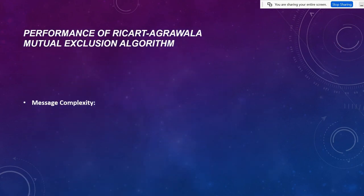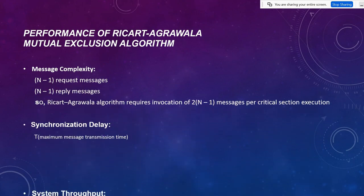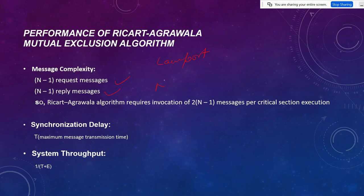Now let's see the performance of the Ricart-Agrawala algorithm. In Lamport's algorithm there are N-1 request messages, N-1 reply messages, and also N-1 release messages. But in the Ricart-Agrawala algorithm the release condition is not there, so there are only two message types. This gives 2*(N-1) messages per critical section. It also optimizes the signal delay: the maximum delay is T, whereas in Lamport's algorithm the timestamp delay was 2T+3, so here it reduces to T.